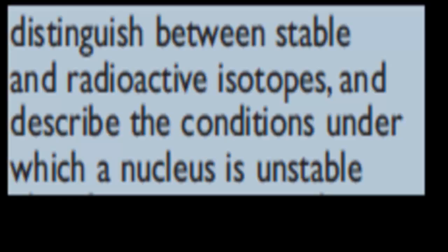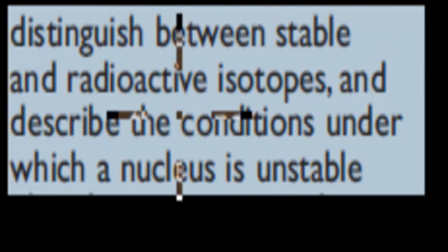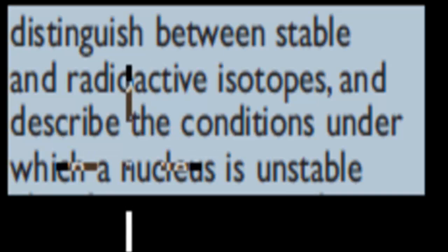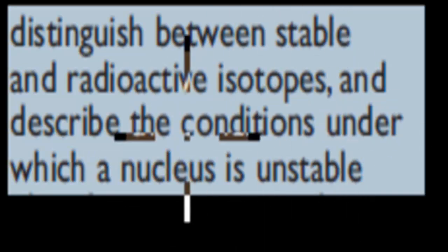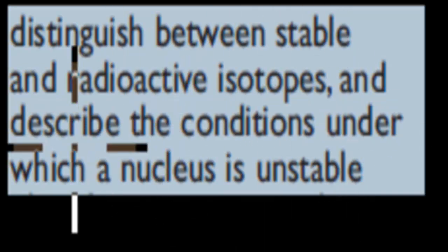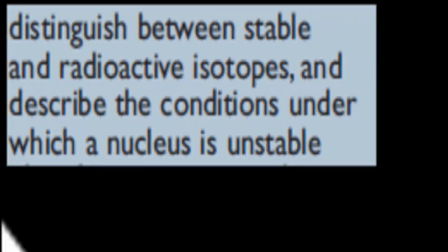Welcome to the first video of the nuclear chemistry chapter. In this video, we're going to cover the first stop point, which says: distinguish between stable and radioactive isotopes, and describe conditions under which a nucleus is unstable. Before we start, I'm going to give you a quick analogy of radioactive and stable isotopes.